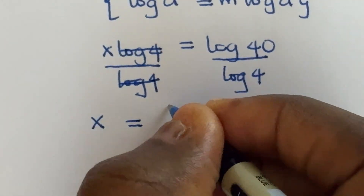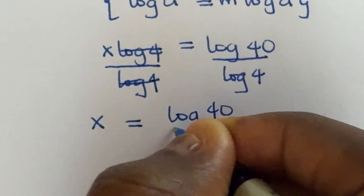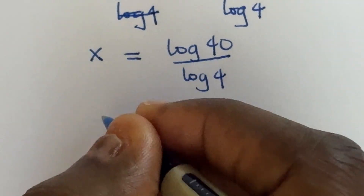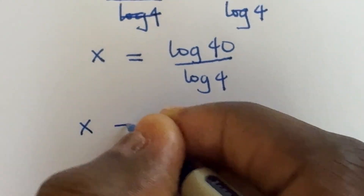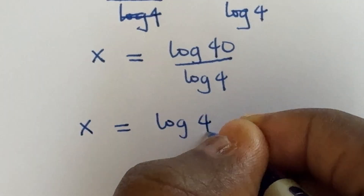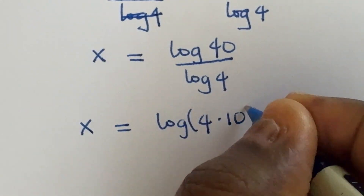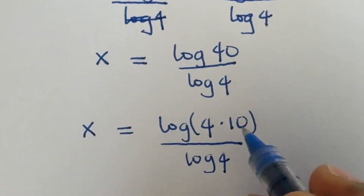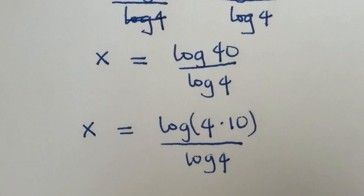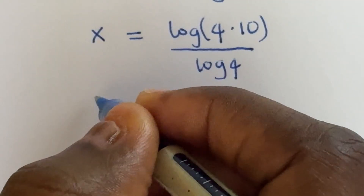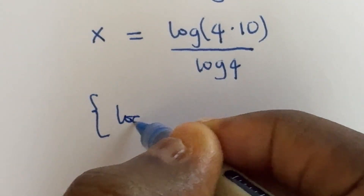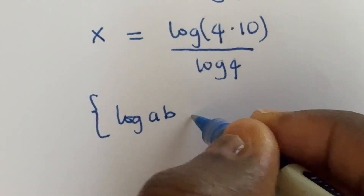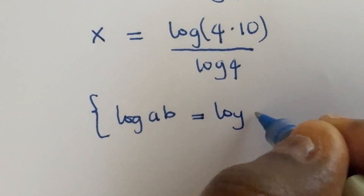I'm going to write log 40 as log of 4 times 10, so that we can separate 40 into log 4 and log 10. The law of logarithm I'm applying says log a·b — when you have the product of two numbers, the logarithm of that product is equal to the sum of their individual logarithms.